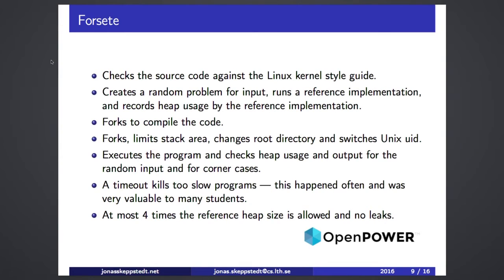What Forsettem first does is check the source code for validity according to the Linux kernel code style. Then it generates random input, runs a reference implementation to generate input for checking the student's code, forks and compiles their code, forks again, limits stack size, and changes the Unix user ID. Since we are executing completely untrusted code, we must change the Unix user ID, and we also implement timeouts and other safeguards.